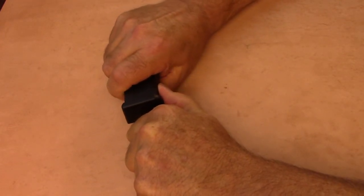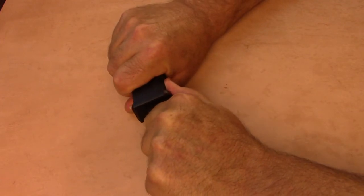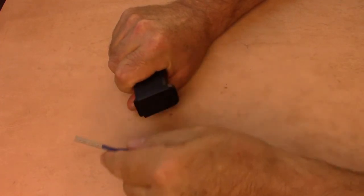Using your thumb for leverage, pull the floor plate towards you. You'll feel it unsnap from the sides of the magazine.